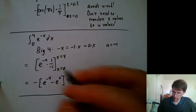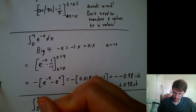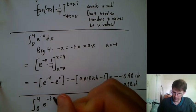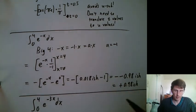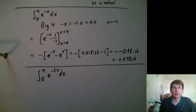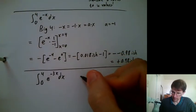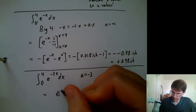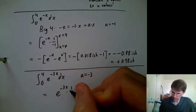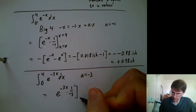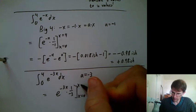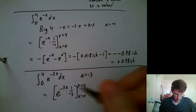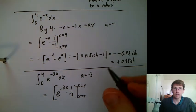Let me give you a quick other practice problem. How about the integral 0 to 4, e to the negative 3x? Well, you'd say a equals negative 3. And so you get e to the negative 3x times 1 over negative 3, x equals 0 to x equals 4. Same basic idea.